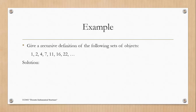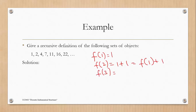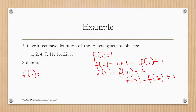Now in this example, we are given the sequence 1, 2, 4, 7, 11, 16, 22 and must find its recursive definition. Analyzing: f(2) = f(1) + 1, f(3) = f(2) + 2, f(4) = f(3) + 3 = 4 + 3 = 7. So the recursive definition is f(1) = 1, and f(n) = f(n-1) + (n-1) for all n ≥ 2.